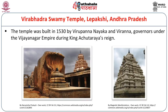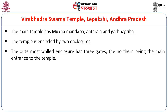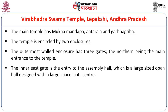The most famous of the Vijayanagara Empire temples outside of Hampi is the Virabhadra Swami temple at Lepakshi, in Hindupur, Andhra Pradesh. The temple was built in 1530 by Virupanna and Vira Nayaks, who were governors under the Vijayanagara king Achyataraya. The main temple has a Mukhamandap, an Antarala and a Garbhagriha, and is encircled by two enclosures. The outermost walled enclosure has three gates, the north being the main entrance. The inner east gate is the entry to the assembly hall with a large space in its centre.